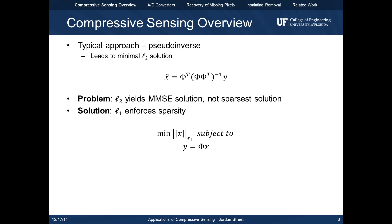One approach to solving this problem would be to use the pseudo-inverse. The pseudo-inverse guarantees the minimal L2 or minimum mean squared error solution, but not the sparsest solution. To solve this, then we minimize the L1 norm of x, subject to the equality constraints of y equals phi x.